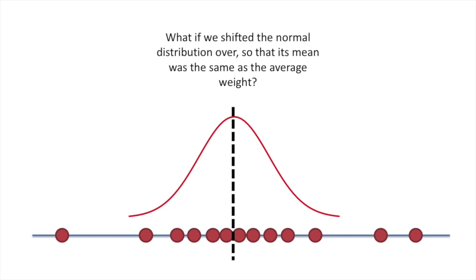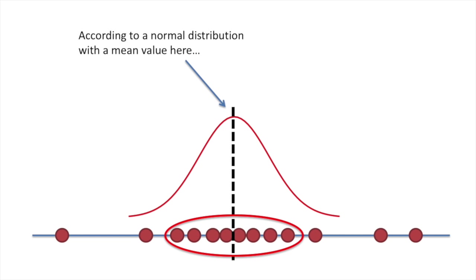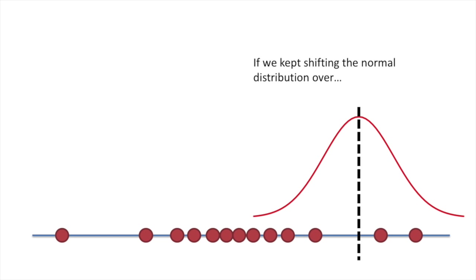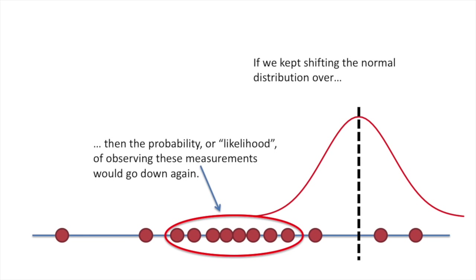What if we shifted the normal distribution over so that its mean was the same as the average weight? According to a normal distribution with a mean value here, the probability or likelihood of observing these weights is relatively high. If we kept shifting the normal distribution over, then the probability or likelihood of observing these measurements would go down again.